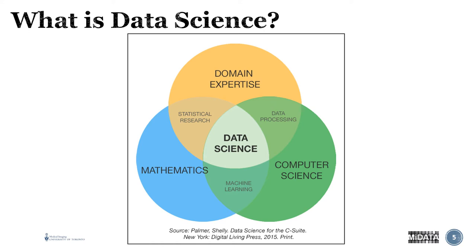The intersections of these three core concepts is where you find what you've probably heard of most. Just collecting data, knowing about the data, and understanding it through computers is data processing — you need somebody who knows what they're collecting and how to collect it. If you then take your data to a statistician and ask them to help you do the analysis to infer from the data, that's statistical research.